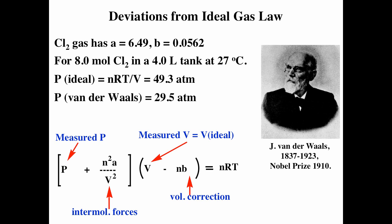For chlorine, its A is 6.49 atm·L²/mol², and its B value is 0.0562 L/mol. If you have 8 moles of chlorine in a 4-liter tank at 27 degrees Celsius — we know at STP 1 mole should be 22.4 liters, so this should be really high pressure, and most likely chlorine isn't going to behave ideally. We can calculate the pressure using the ideal gas law and get 49.3 atmospheres. Using Van der Waals', we get 29.5 atmospheres — a huge difference. Under very high pressures, gases deviate from ideal behavior greatly.